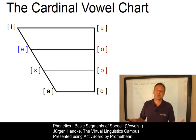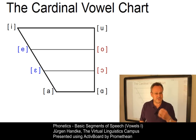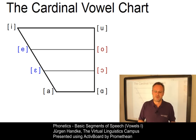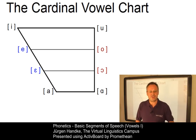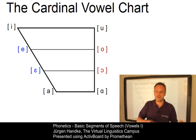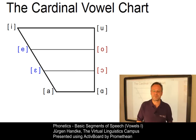With the third parameter — the parameter of lip rounding — you may have noted that some of the vowels just produced were produced with rounded lips, like O, while others were produced with spread lips, like E. With this parameter, we can now create two sets of cardinal vowels: the primary set and the secondary set.